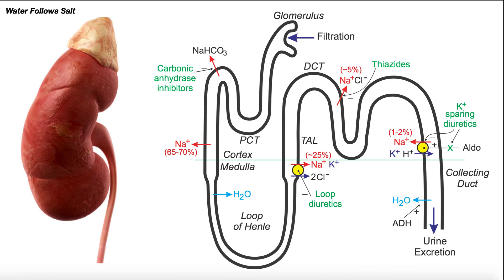Before we get into all the diuretic drugs, let's briefly review the structure of the nephron. Here's our kidney right here, and the kidney is composed of thousands and thousands of individual nephrons, and each nephron shown here is a functional unit of the kidney.